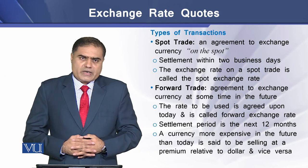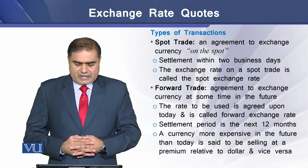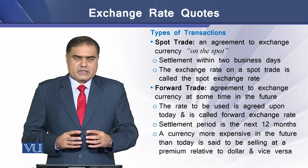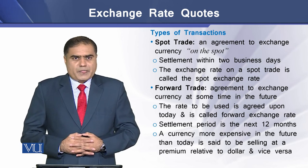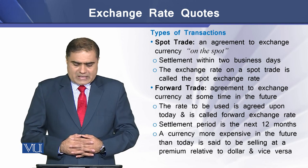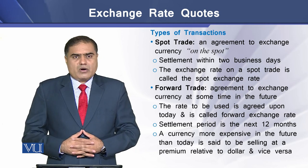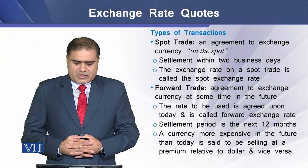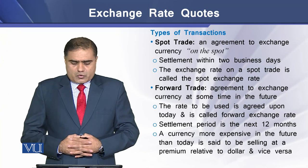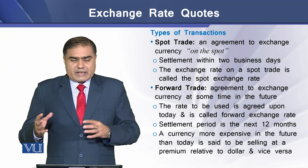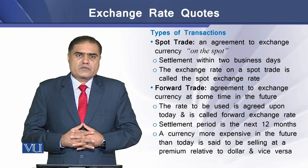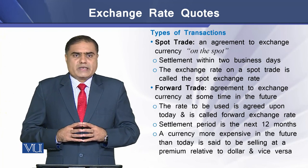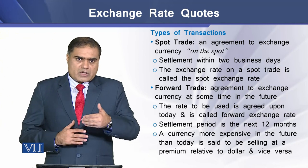In the foreign exchange market there are two types of transactions: spot trade and forward trade. Spot trade refers to an agreement to exchange currency at the present time, or at time zero. In a spot trade, the transaction is generally settled within two business days, and the exchange rate used is called the spot exchange rate. Forward trade refers to an agreement to exchange currency at some point in the future, at a rate agreed upon today, called the forward exchange rate. Forward trade settlement generally takes place within the coming 12 months.